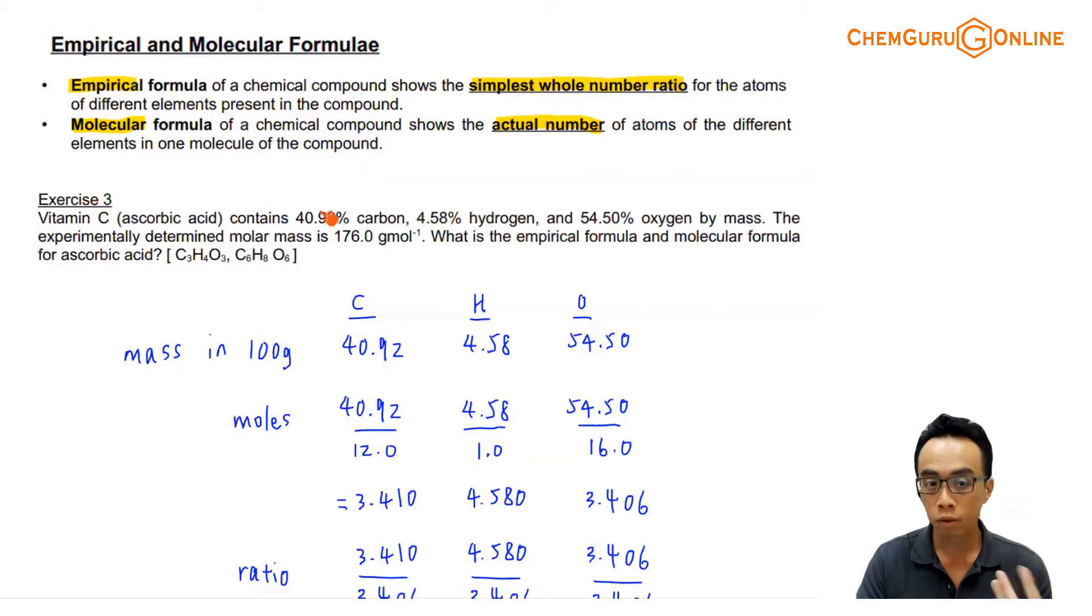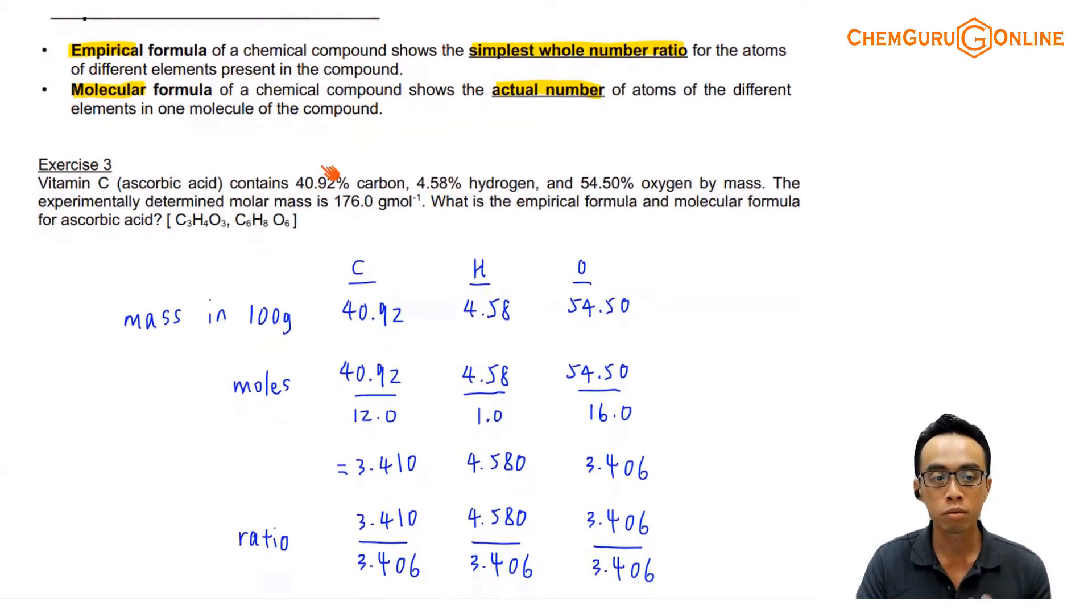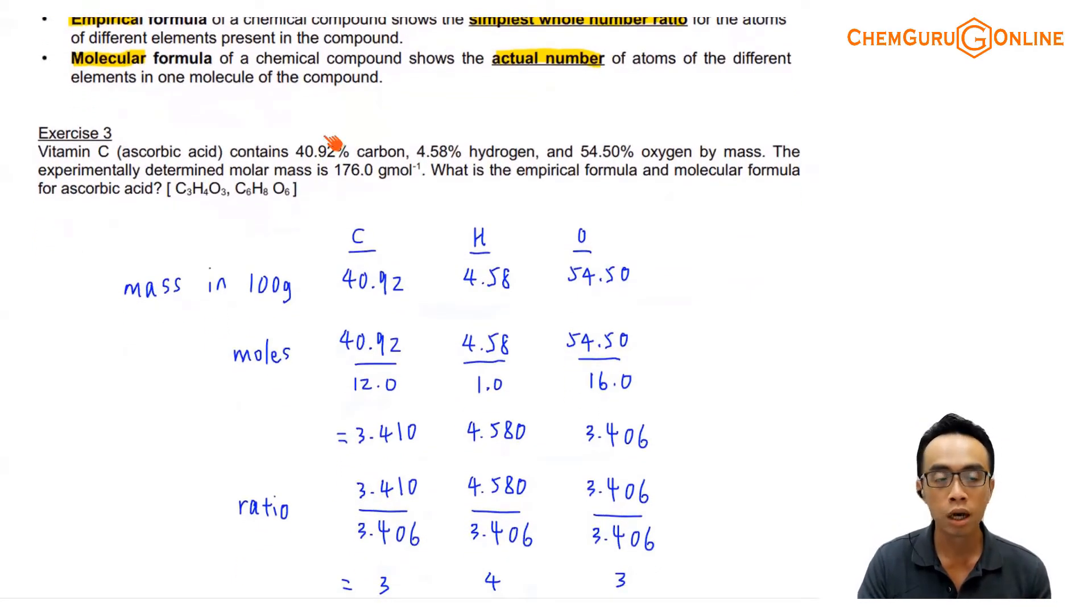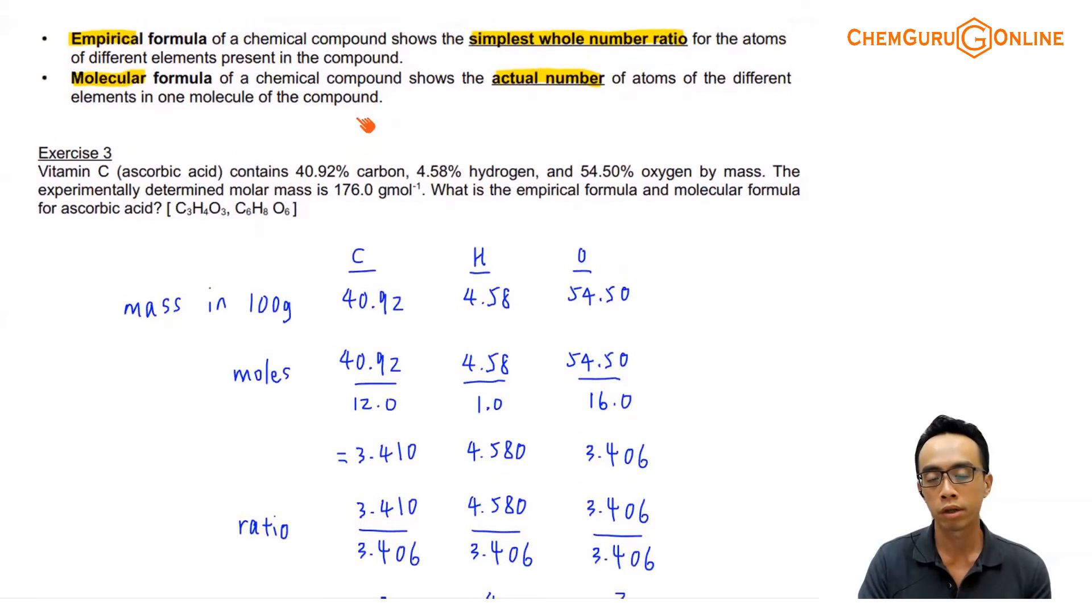Empirical formula, if we want to work this out, is actually fairly simple. We can talk about it in exercise 3. Molecular formula, of course, talks about the actual number of atoms that you can find in the compound.